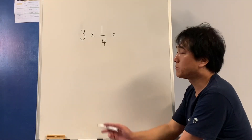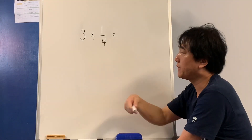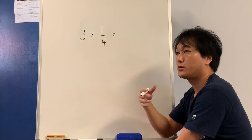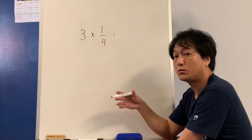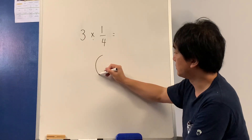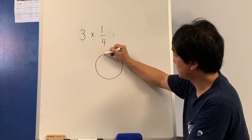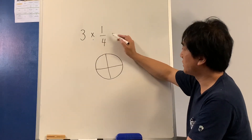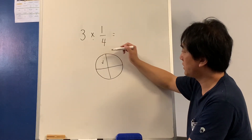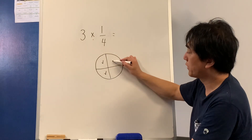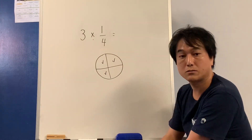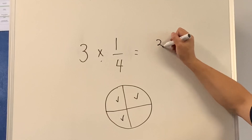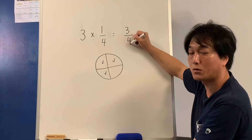Remember what multiplication means. If you have 3 times 1 quarter, that means you have 3 lots of 1 quarter pieces. 1 lot of 1 quarter, 2, 3 lots of 1 quarter pieces. The answer seems like 3 quarters.